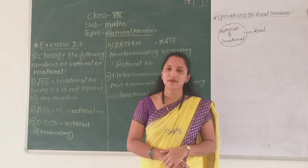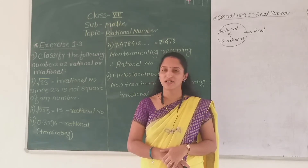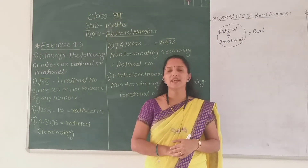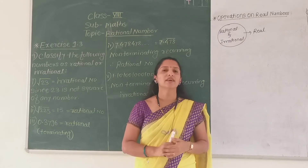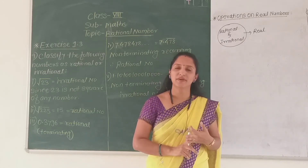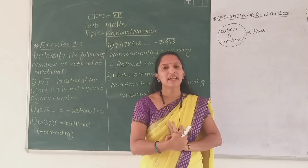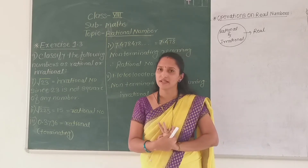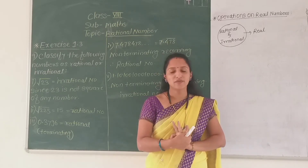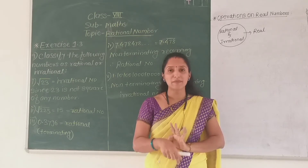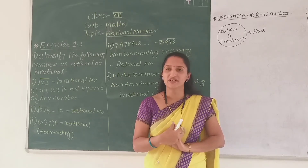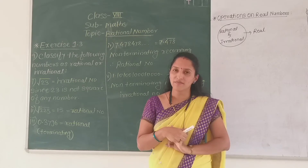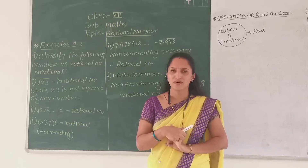Now what about irrational numbers? Irrational numbers also satisfy the properties of commutativity, associativity, and distributivity. But what about the closure property of irrational numbers? That means, when we add, subtract, multiply, or divide two irrational numbers, do we always get an irrational number?